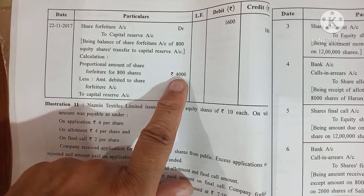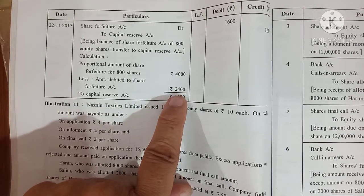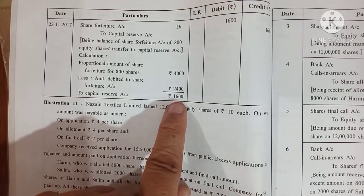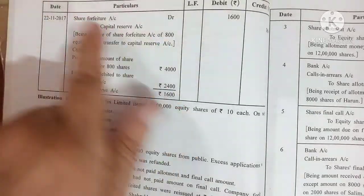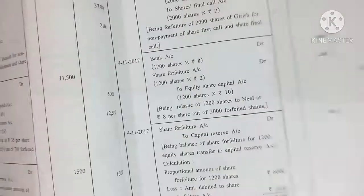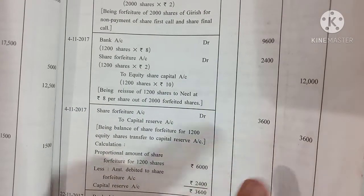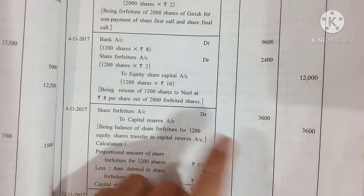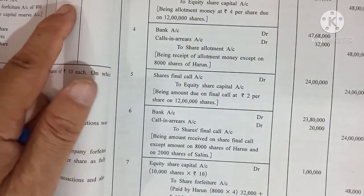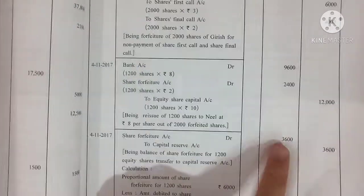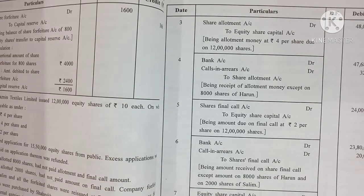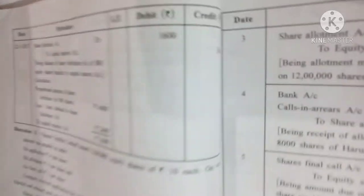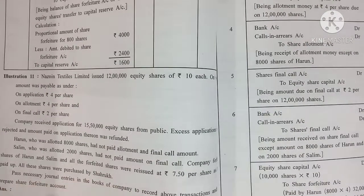This 1,600 is the net profit for 800 shares which is transferred to Capital Reserve. The 3,600 is the net profit for 1,200 shares. The company's total net profit is 3,600 plus 1,600 equals 5,200. I think you understood — if anything is not clear you can tell me. Like this, short type of sums you have to practice for your board exam.